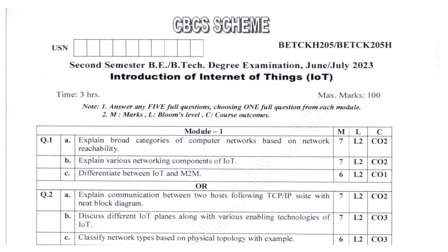Coming under Module 1: explain broad categories of computer networks based on network reachability, explain various networking components of IoT, and differentiate between IoT and M2M. These are the different questions asked in Module 1, which carries 7 marks. The split up is totally 20 marks for each module — Module 1: 20, Module 2: 20, Module 3: 20, Module 4: 20, and Module 5: 20.